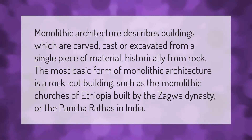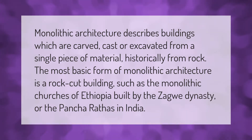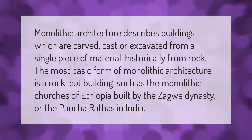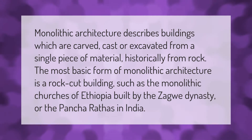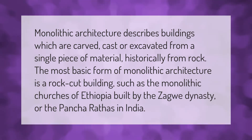Monolithic architecture describes buildings which are carved, cast, or excavated from a single piece of material, historically from rock. The most basic form of monolithic architecture is a rock-cut building, such as the monolithic churches of Ethiopia built by the Zagwe dynasty, or the Pancharathas in India.